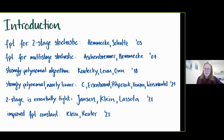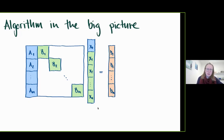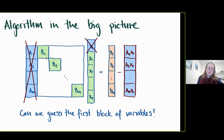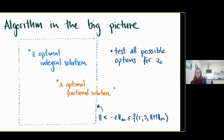Our matrix has this block structure. If we know the optimal value of x_0, the global variable, we can fix it and put it on the right-hand side. The problem then decomposes into n small integer programs of constant dimension, solvable in essentially constant time. The big question becomes: can we actually guess what this first block of variables is?